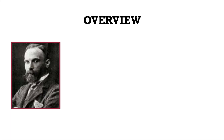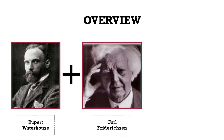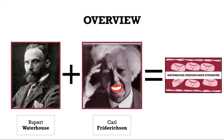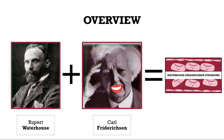Back in the early 1900s, Rupert Waterhouse and Carl Friedrichsen were the physicians who gave the disease its name. It's defined as an acute primary insufficiency of the adrenal gland, most commonly caused by adrenal hemorrhage due to severe bacterial infection, and is seen in small children, asplenic or immunosuppressed individuals — so every age is possible.